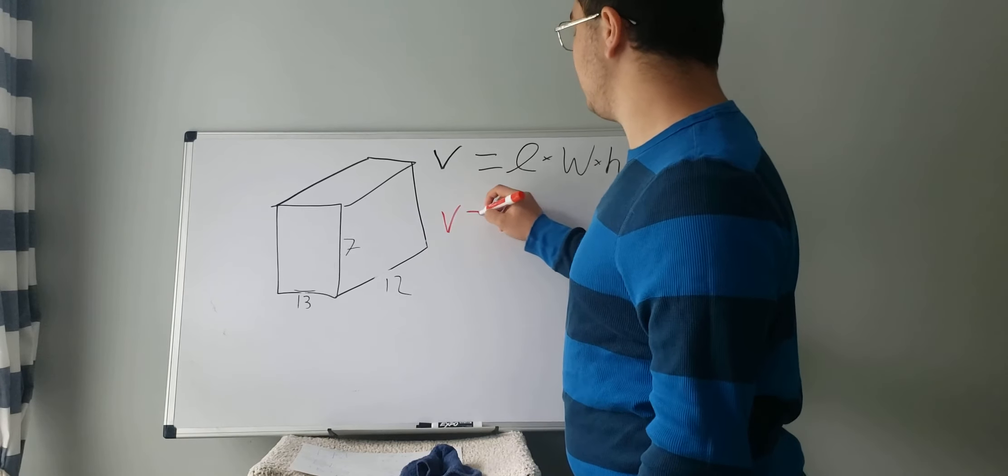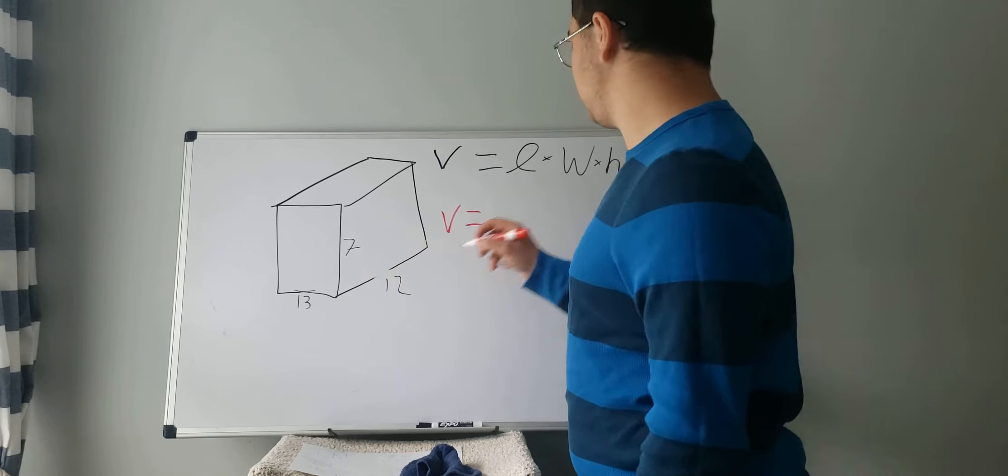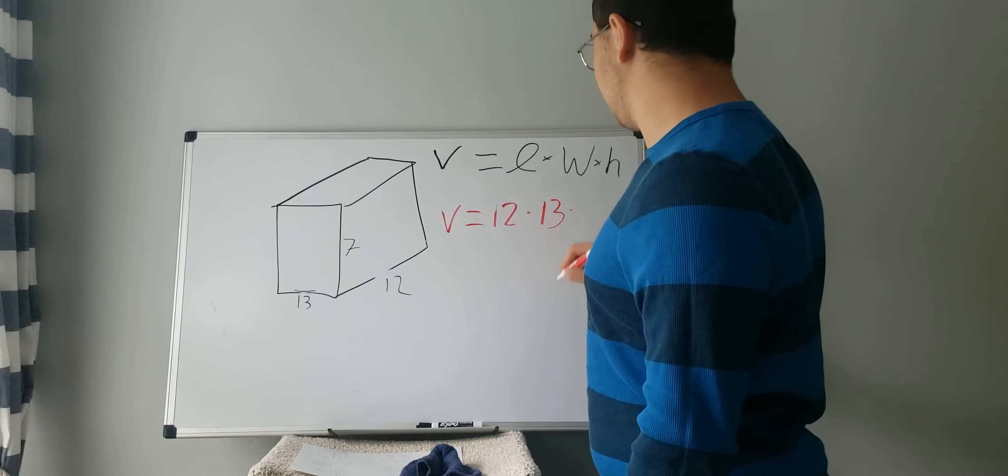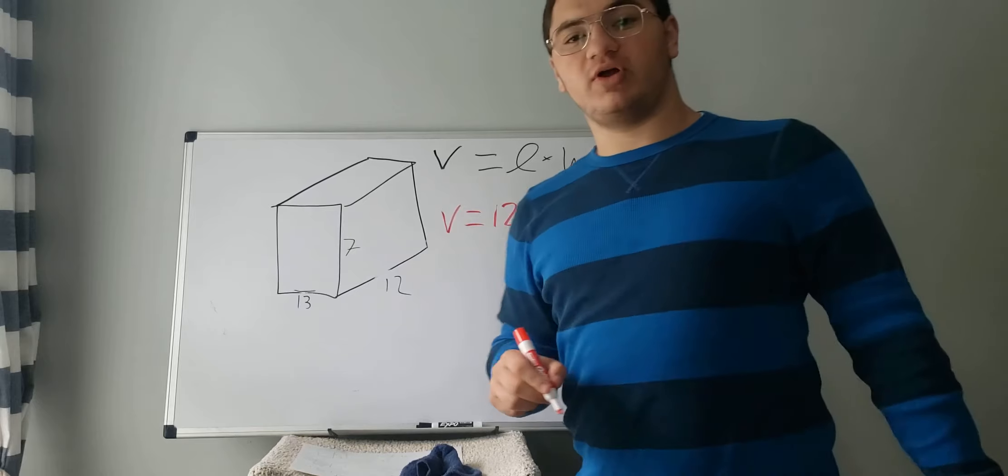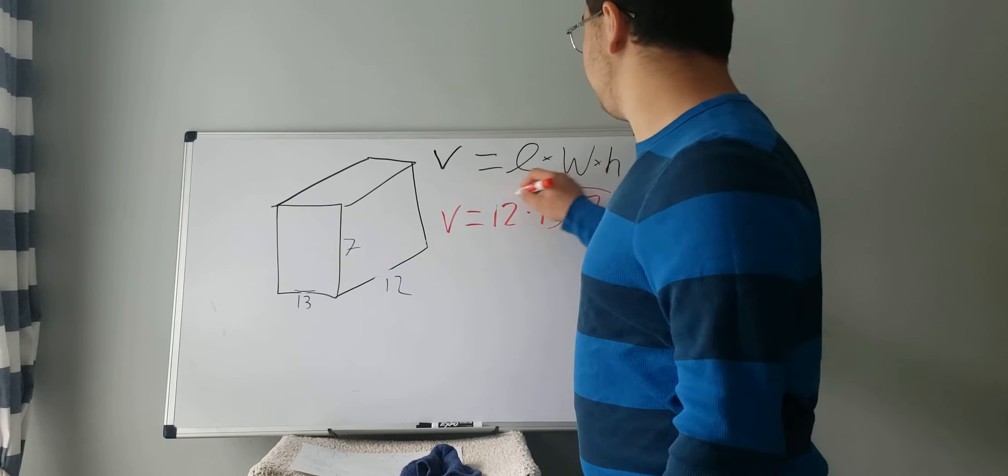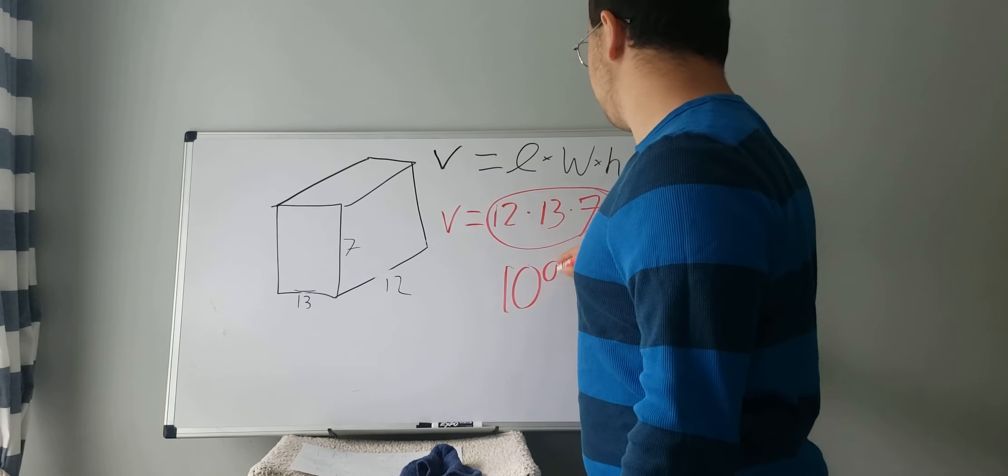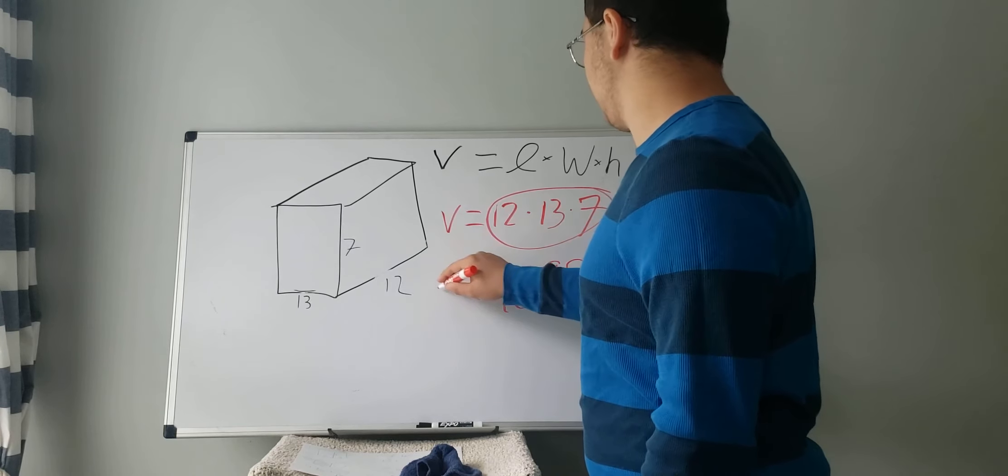So let's do that. So volume equals the length is 12 times the width is 13 times the height is 7. And I already went ahead and did this. And your answer should be, by multiplying all these three together, 1092. And that is your answer.